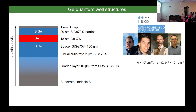Our idea was: Delft has done Loss-DiVincenzo — let's try singlet-triplet qubits in germanium. The material we work with: you start with silicon, slowly increase the germanium content. The graded buffer is full of defects due to the large lattice mismatch between germanium and silicon. You reach 70% concentration, then grow two micrometers of constant composition. Then you put an 18 nm germanium quantum well, a 20 nm SiGe barrier, and finish with 1 nm of silicon — because germanium oxide is extremely reactive.